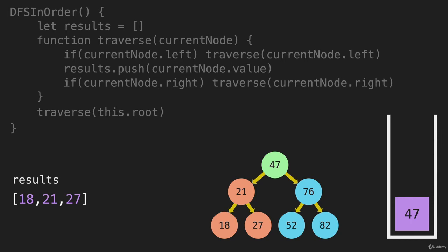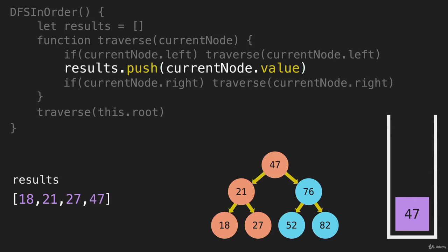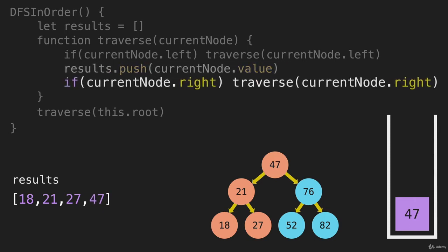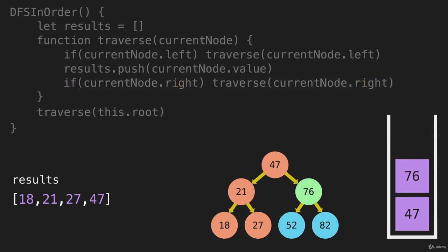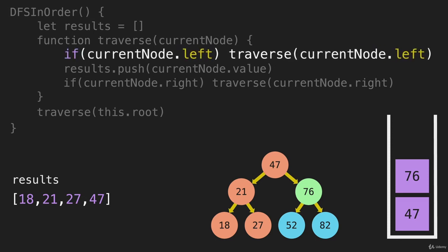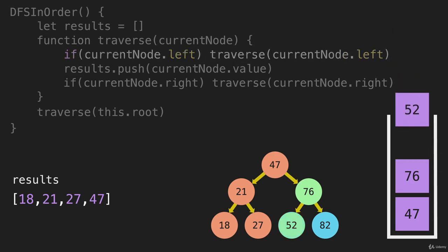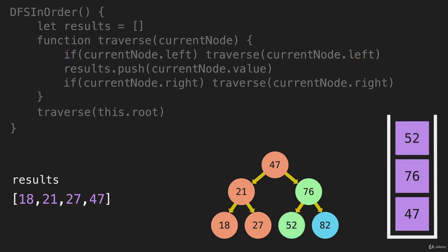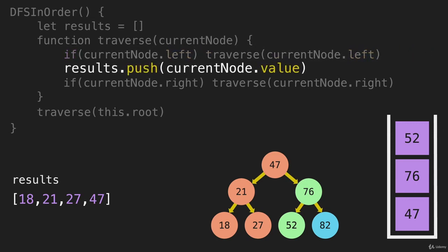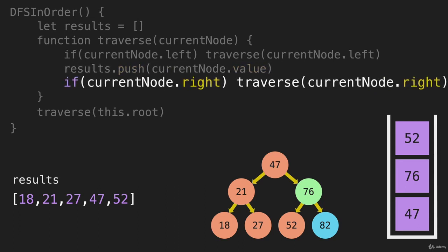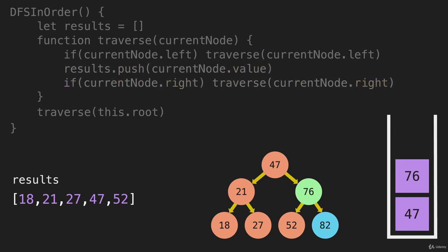The 47 is now the top item on the call stack. It has already gone left, so now we push its value into the array. Then it's going to go right, so we visit that 76 node — it gets pushed onto the stack. 76 goes left first, which pushes 52 onto the stack. Now 52 is going to try to go left — there's nothing there. We push the value of 52 into the array, then try to go right, and now that one is done. We can remove that from the stack.